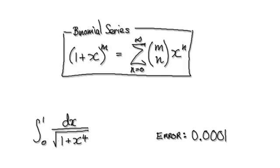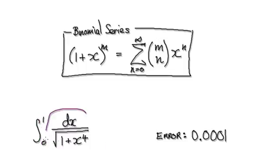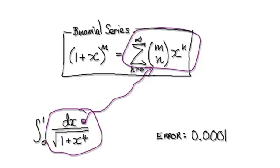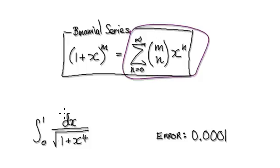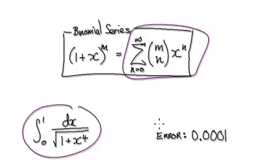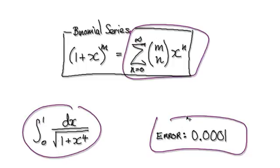In this video we're going to try and integrate this from 0 to 1. The thing is we don't know how to integrate this directly, so we need to turn this into a series and then integrate each individual term of the series. The question is how many terms do we need in order to get this to be within this level of accuracy?